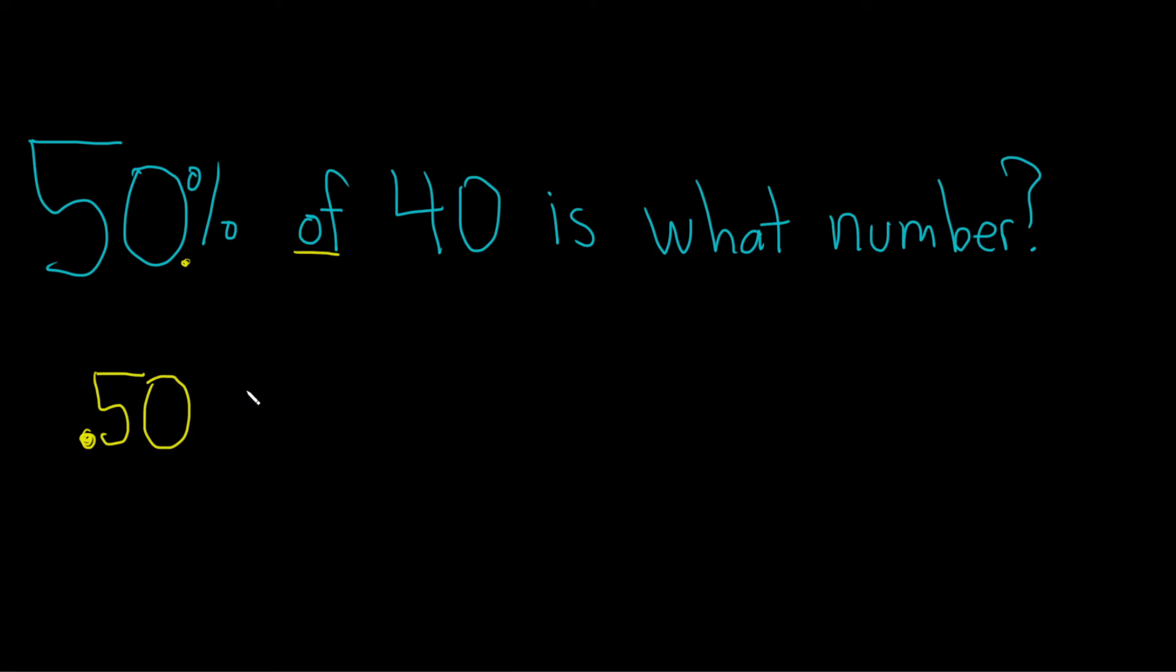Of means multiply in mathematics - super important. So 0.50 times 40. Converting to a decimal, of means multiply, and then 40.